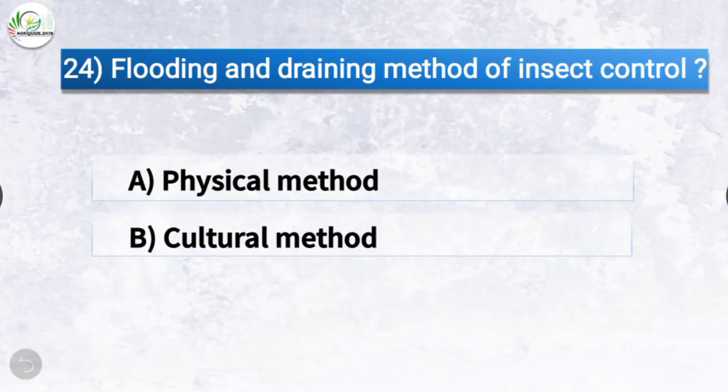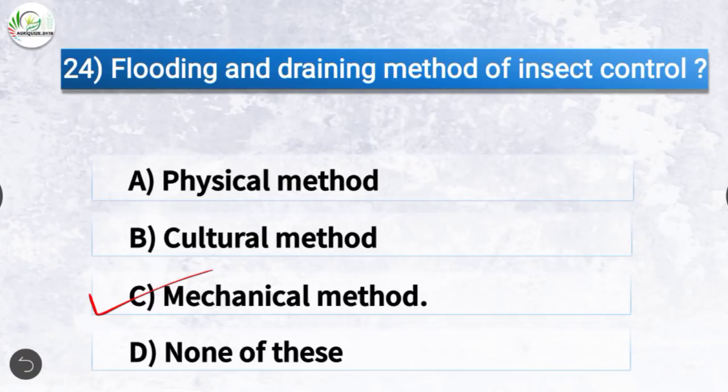Question number 24: Flooding and draining method of insect control is? The correct answer is option C, mechanical method. Flooding and draining method of insect control is mechanical method.